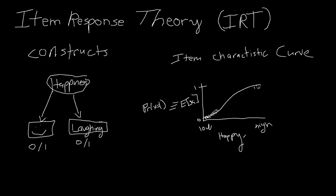Being able to have a mathematical and conceptual way of relating the construct that we're interested in to observable characteristics is the fundamental principle of item response theory. There are many advancements we can take from this relatively simple idea of looking at probabilities and expected item responses, to then expand upon our understanding of different types of items or different types of response processes. In general, item response theory is this basic foundational principle for relating the construct we're trying to measure to characteristics that we can observe.